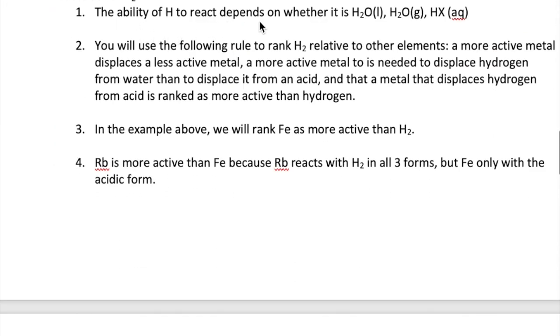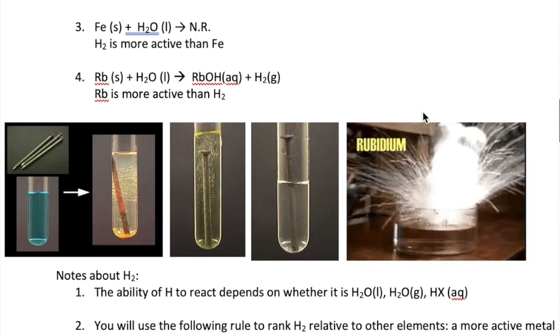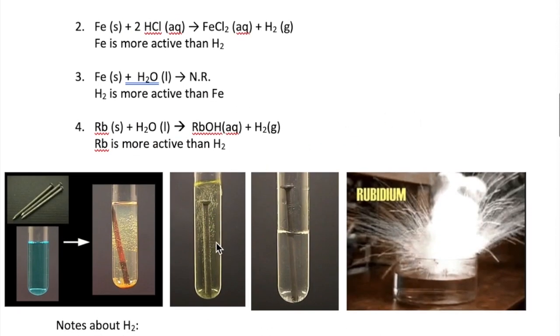So H2 can be present as liquid water, gaseous water or steam, or acid. Each of these forms of H2 has different reactivities versus metals. With the acid being the most reactive, there will be metals that will react with acid but not with liquid water, as our example of iron shows. To determine the relative activities of H2 to a metal that has different reactivities, we compare the metal to the acidic form of H2. If a metal reacts with acid, then it is considered to be more active than hydrogen. In the example we have, we would say that iron is more active than H2 because iron reacts with acid.